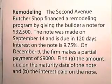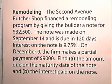The Second Avenue Butcher Shop financed a remodeling program by giving the builder a note for $32,500. The note was made on September 14th and is due in 120 days. Interest on the note is 9.75%. On December 9th, the firm makes a partial payment of $9,000.